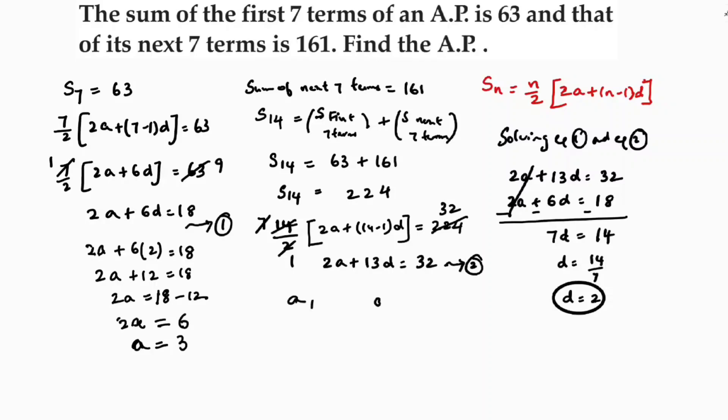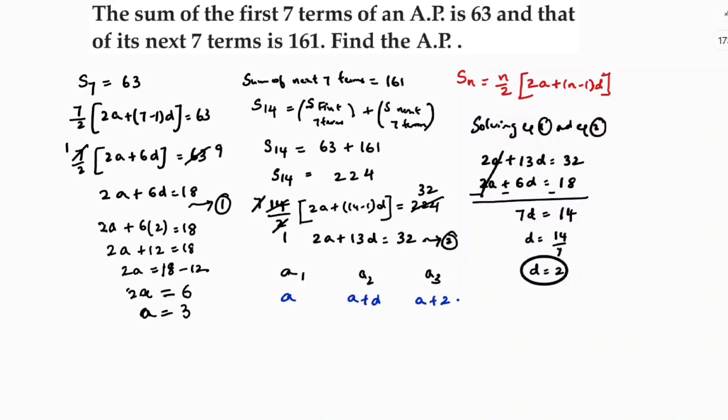Now the series is first term, second term, third term. First term is a, second term is a plus d and third term is a plus 2d, because the nth term formula is an equals a plus n minus 1 into d. So here a is 3, 3 plus 2 is 5, 3 plus 4 is 7, so on. This is AP.